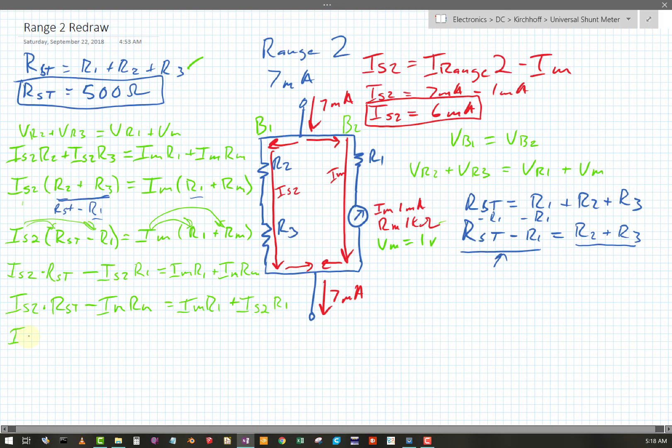Let's rewrite this. Is2 times Rst minus Im Rm equals, now I can factor out an R1, R1 times Im plus Is2. Okay, now all I have to do now to solve for R1 is divide both sides.